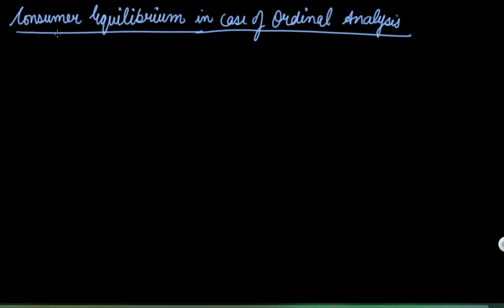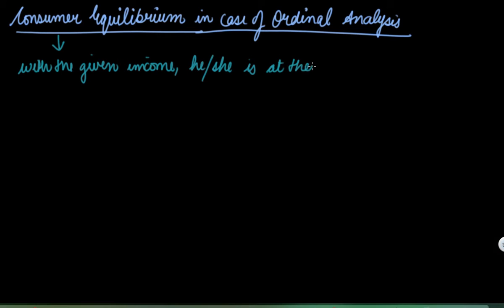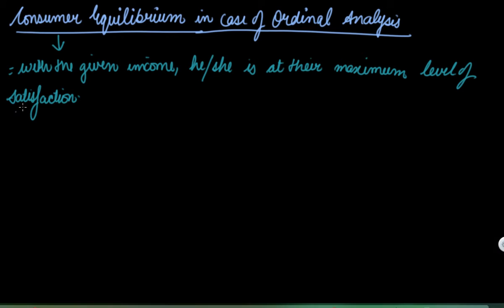In this video we will be understanding the most important topic of our unit, that is consumer equilibrium in the case of ordinal analysis. A consumer is at equilibrium when, with the given income, he or she is at their maximum level of satisfaction. To find out the consumer equilibrium, we need two tools.